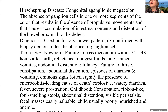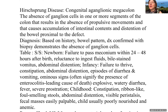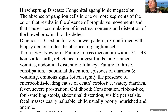Hirschsprung's disease is a congenital aganglionic megacolon. The absence of ganglion cells in one or more areas of the colon causes a decrease or absence of propulsive movements, increased accumulation of intestinal contents, and distension of the bowel proximal to the defect. Without those ganglion cells, the intestine does not move stool through.